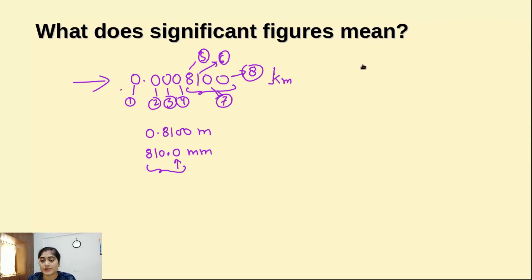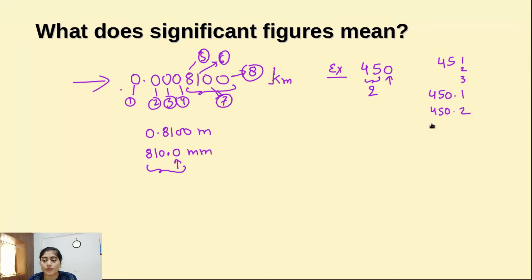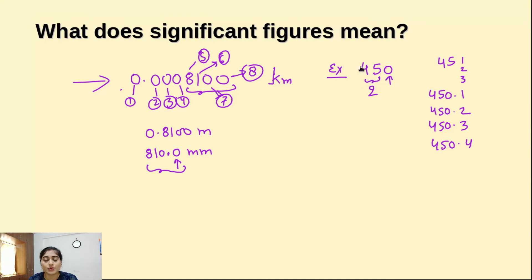That's why we call these 4 digits significant digits or significant figures. Now let's take another example. Suppose you are having 450. In this value, how many significant digits are there? There are only 2 significant digits. The zero we cannot say is significant — it could be a round off. It may be 450.1, 450.2, or 450.3. So we don't know exactly. But 45 is fixed, so only the starting 2 digits are significant.